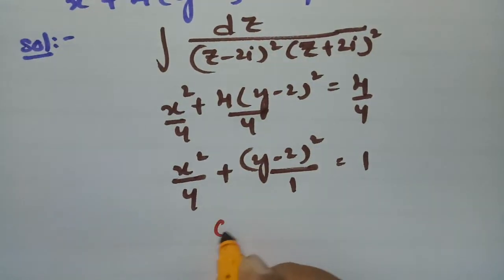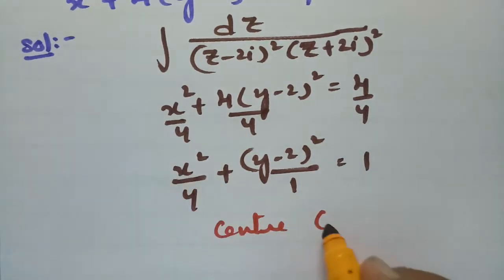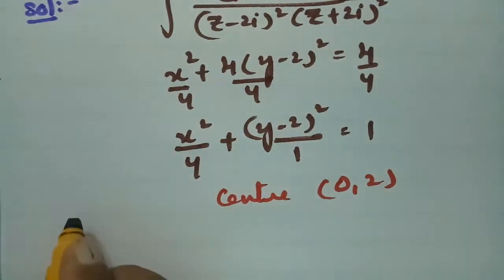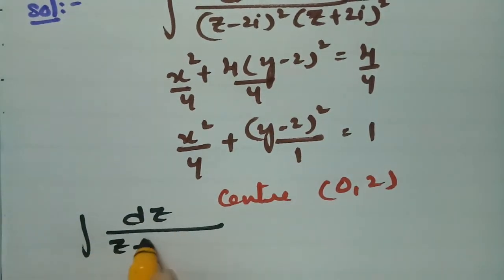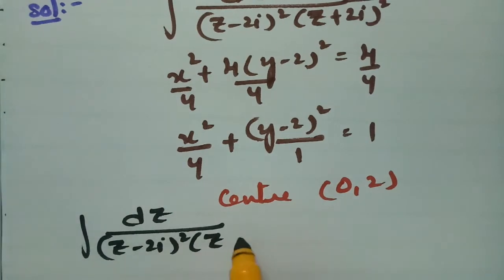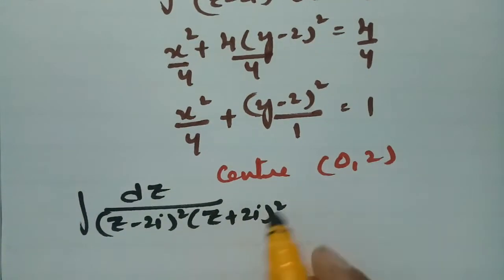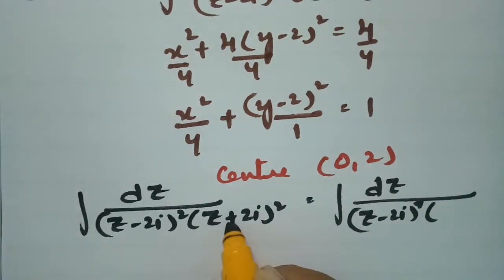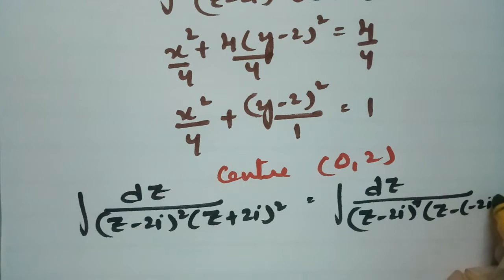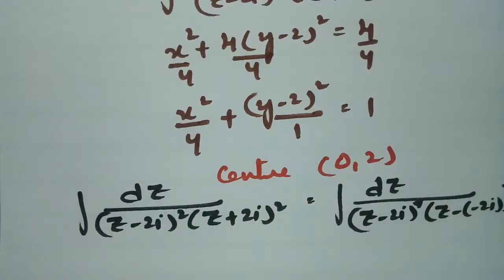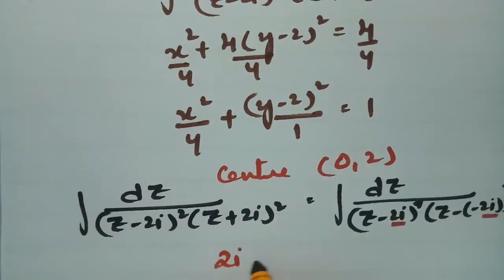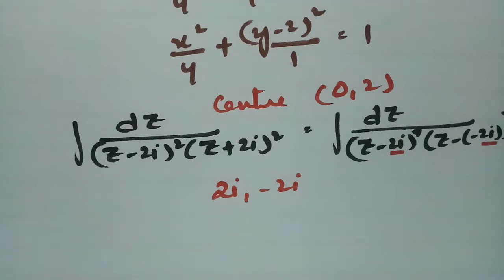The center of this ellipse is at (0, 2) — x-axis 0 and y-axis 2. Now we need to evaluate the integral dz by (z minus 2i) squared into (z plus 2i) squared. Transforming this, we get z minus 2i whole square and z minus (minus 2i) whole square. The singular points are 2i and minus 2i.